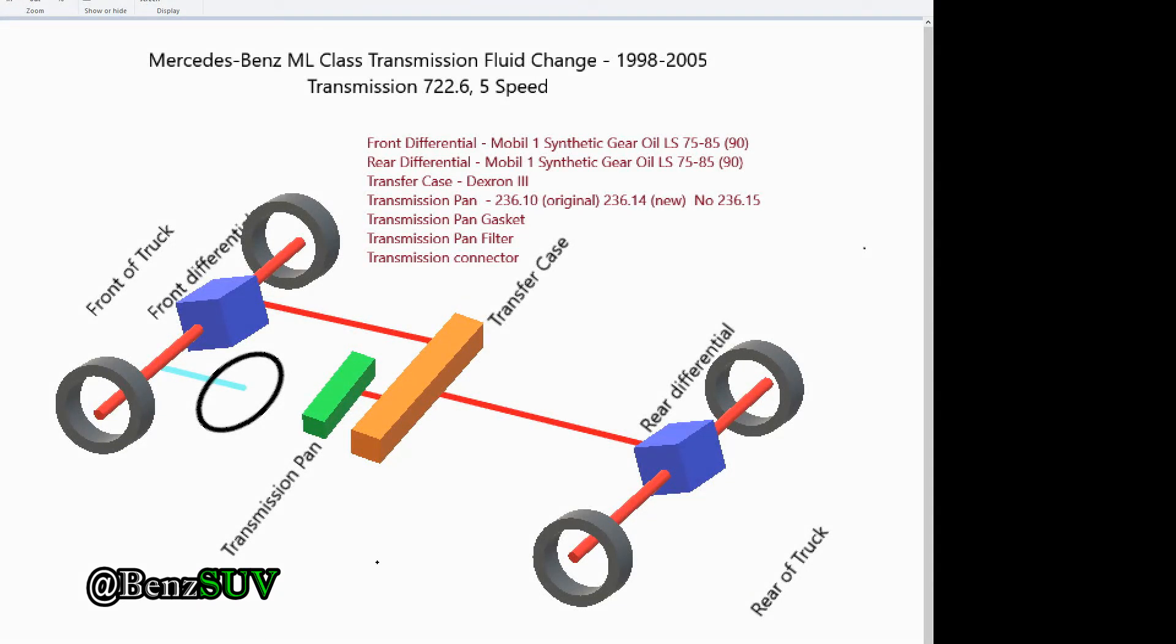Hello YouTubers, today I'm going to be talking about the drivetrain flush, basically all the gear oil that needs to be flushed on the ML320 from years 1998 to 2005, which has a transmission 722.6, which is a 5-speed automatic.